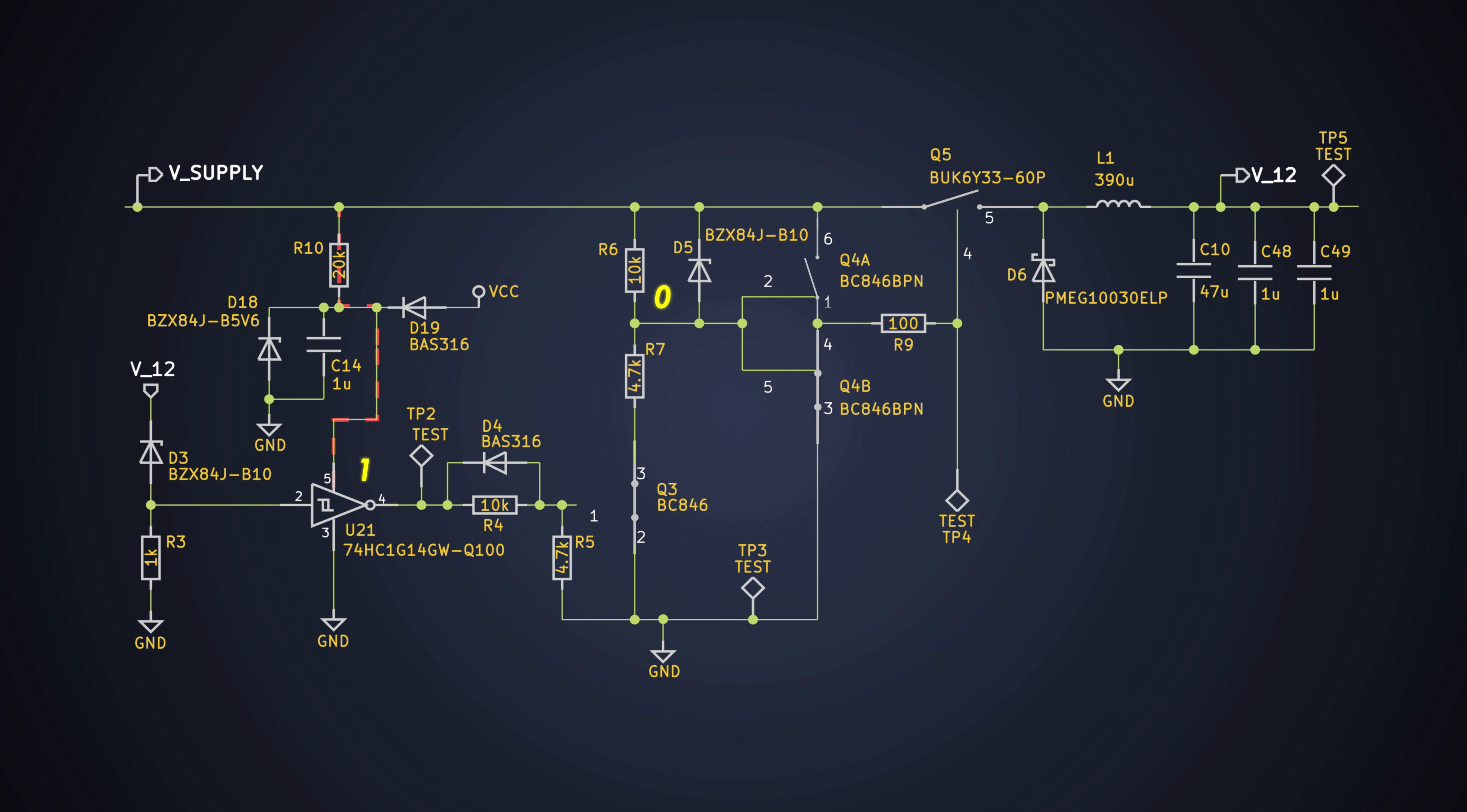If the input is 0, Q1B would turn on and pull the gate of the MOSFET Q5 to ground, which will turn on the MOSFET. As soon as Q1 turns on, the inductor L1 will charge and voltage at the output would rise. This will give feedback and it will come from the Zener diode D3.